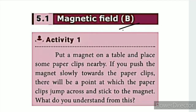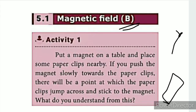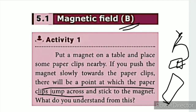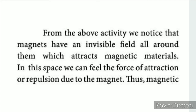The symbol for magnetic field is B. Put a magnet on the table and place some safety pins nearby — there is a magnetic field on the table. If you push the magnet slowly towards the safety pin, you can observe the effect of the magnetic field. You can also move the magnet away. What do you understand from this activity?